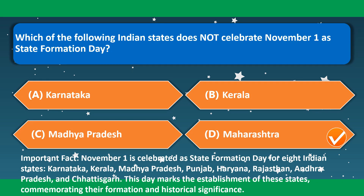Which of the following Indian states does not celebrate November 1st as State Formation Day? This is Maharashtra. November 1st is celebrated as State Formation Day for 8 Indian states: Karnataka, Kerala, Madhya Pradesh, Punjab, Haryana, Rajasthan, Andhra Pradesh and Chhattisgarh. This day marks the establishment of these states, commemorating their formation and historical significance.